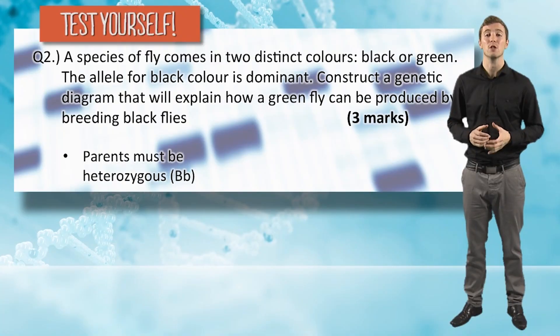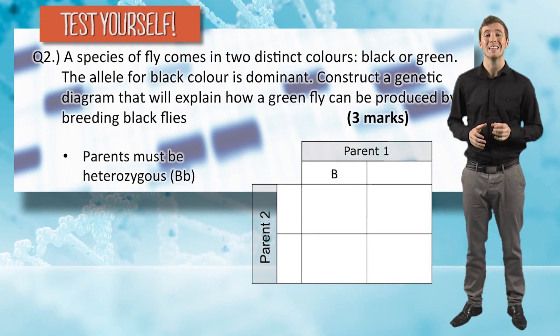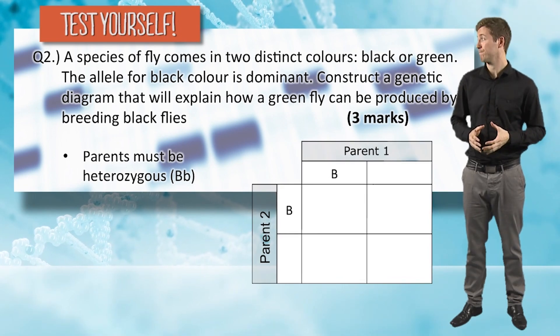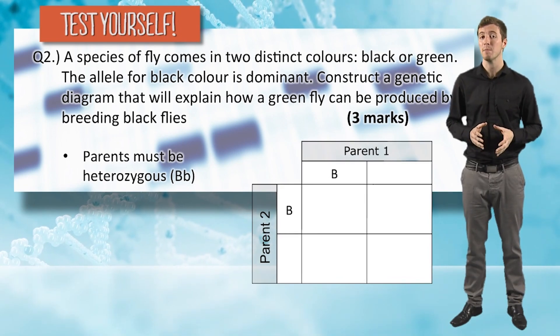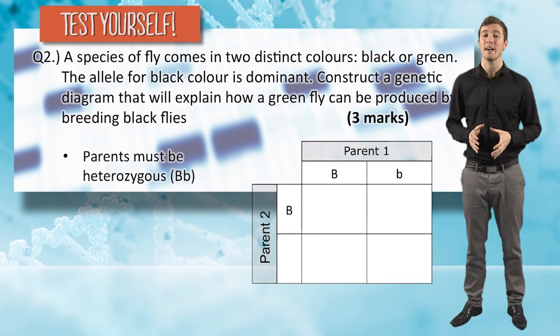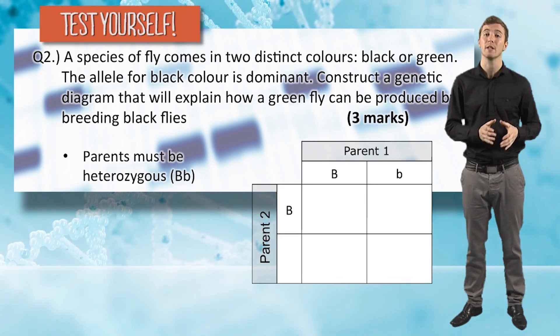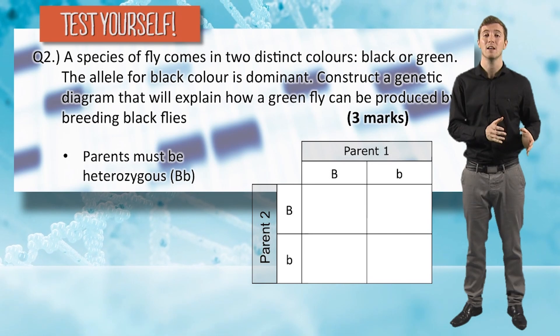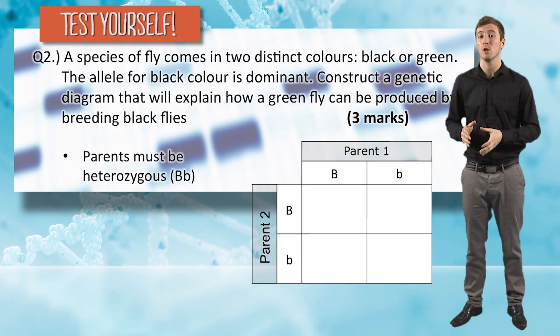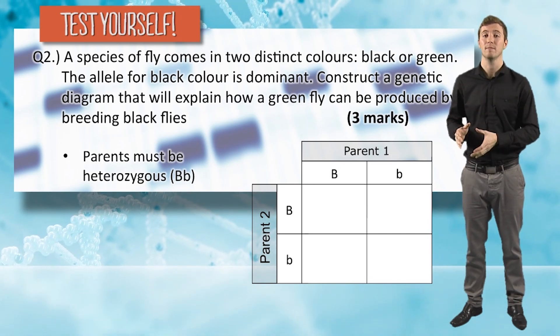In your genetic diagram you needed to show three distinct things worth a mark each. The first thing you had to realise was that the parents needed to be heterozygous — meaning they needed to have a copy of the dominant black allele and a copy of the recessive green allele.